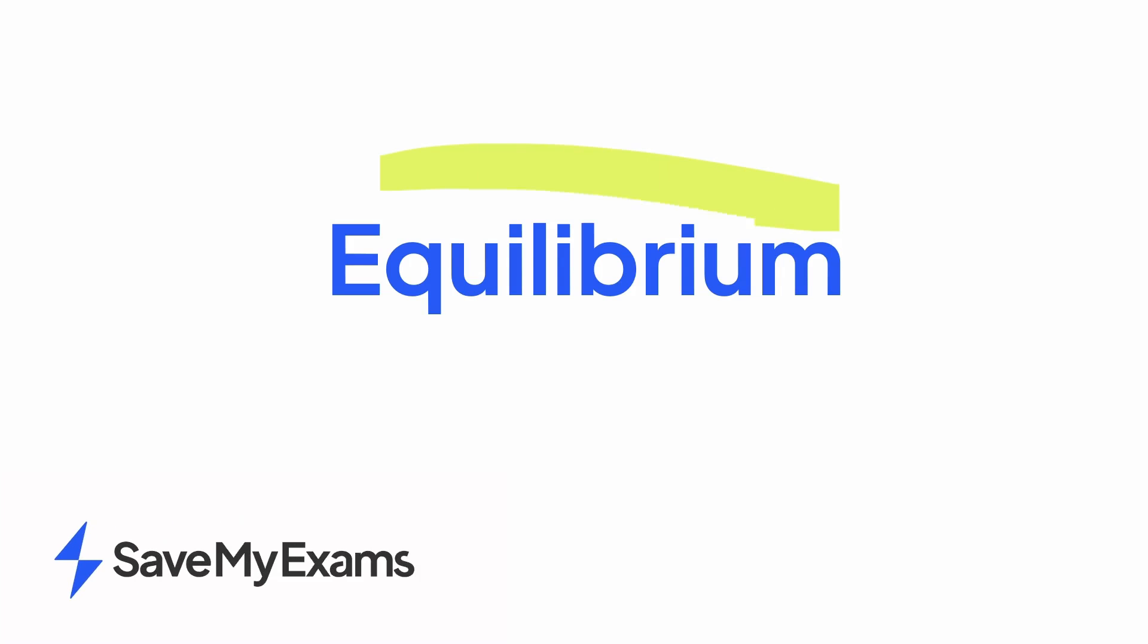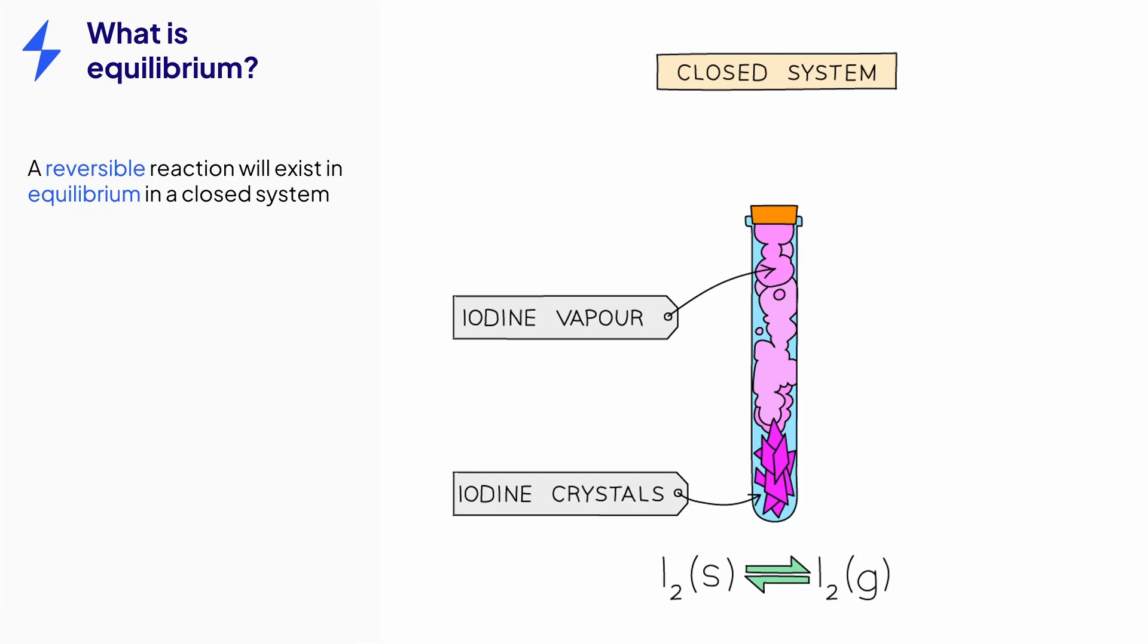This video is on the topic of equilibrium. A reversible reaction will exist in equilibrium in a closed system. A closed system is one in which reactants and products cannot escape.